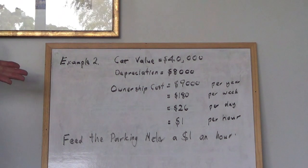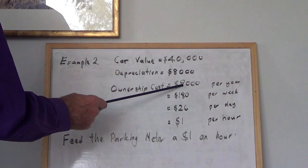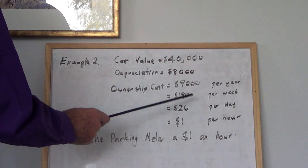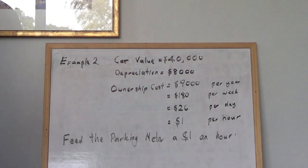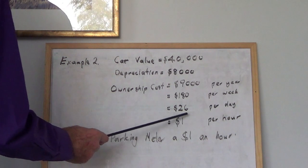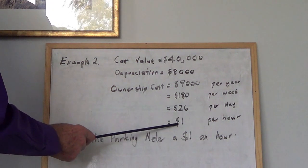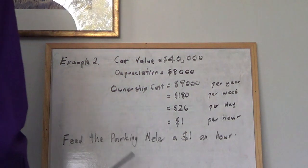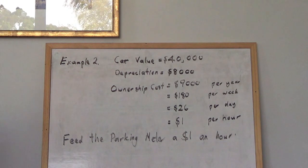So we divide by 50 and we'll get $180 per week. Then we divide that by 7 and we'll get $26 a day, which works out to be $1 an hour. So you have to feed the parking meter $1 an hour.